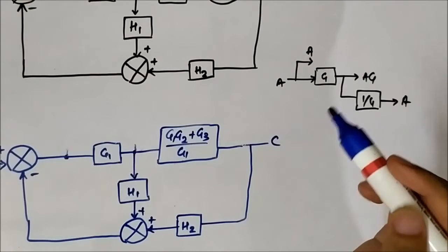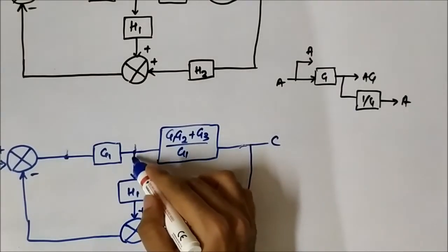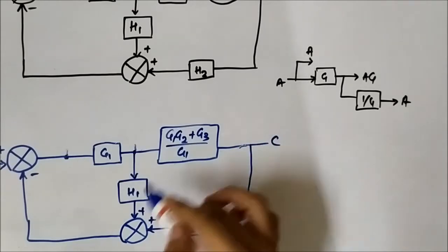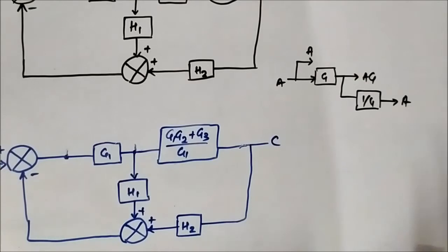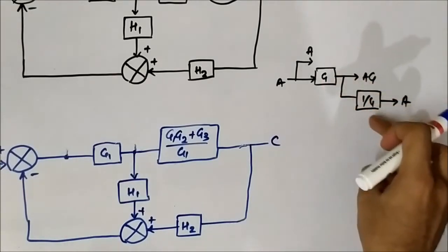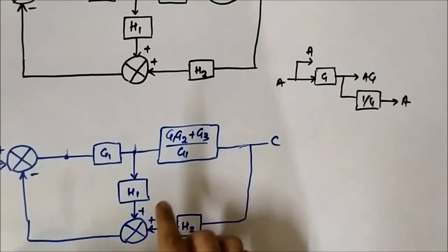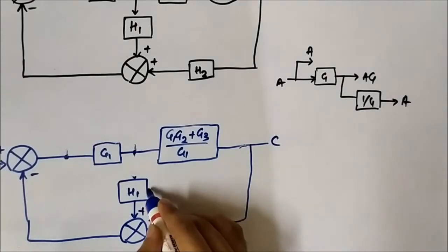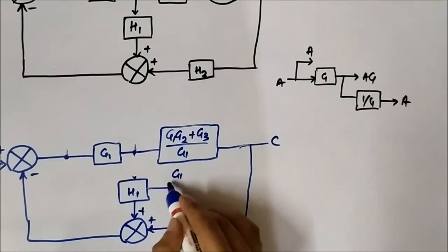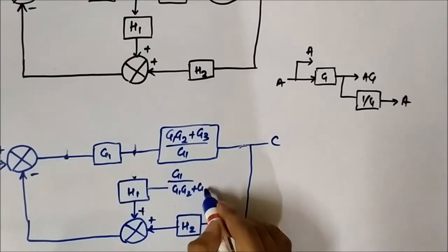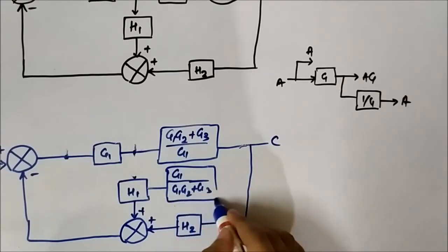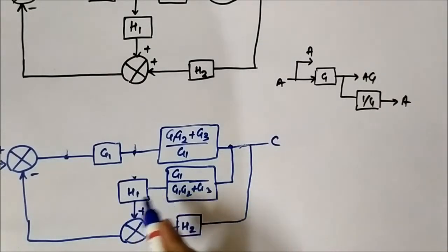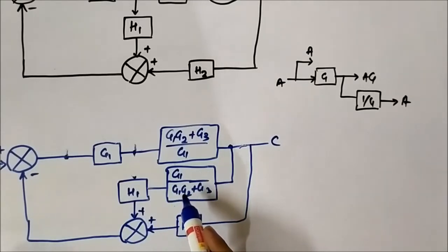Here again we have to shift something. This takeoff point — if we shift it ahead of this block (G1·G2 + G3)/G1, then these two blocks will become in cascade and things will get easy. Again the same approach: we will put a reciprocal of this block in this part. So shifting this takeoff point here means putting a G1/(G1·G2 + G3) block.